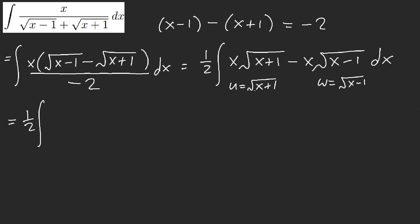And we have u times, and x is u squared minus 1. Right? u squared minus 1. And then you can't forget the 2u du. Okay?